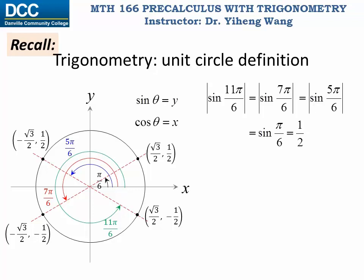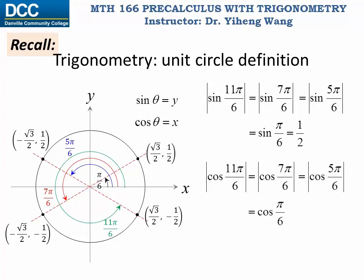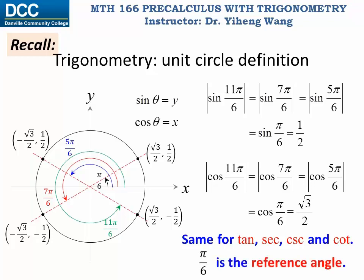A similar thing holds for the cosine values, and we can show that this is also true for all the other four trigonometric functions. This gives us the hint that to determine the trigonometric function values of those other angles, all we need to do is determine the trigonometric function values for the special angle π/6, and then add a negative sign when necessary. This angle π/6 is known as the reference angle for the other three angles.